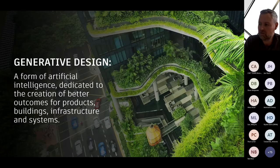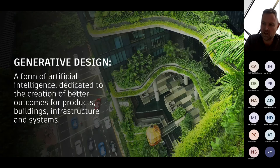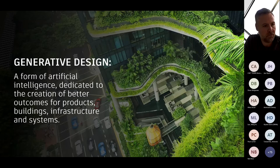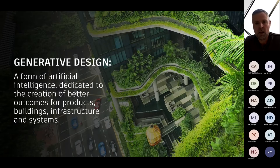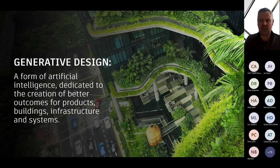I want to give you a definition of generative design. It's very hard — you can go onto Wikipedia or Google it and find multiple ideas on how to define it. At Autodesk, we like to define it as: a form of artificial intelligence dedicated to the creation of better outcomes for products, buildings, infrastructure, and systems. So you can see it's something that can be used very broadly — on architectural projects, engineering projects, construction projects, or even how you want to organize your interior or put plants into your garden.